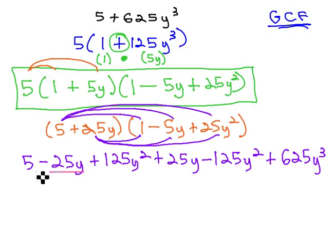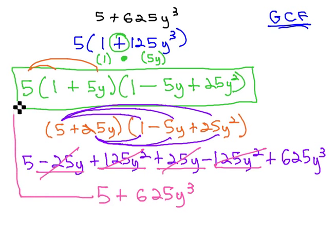As we try and combine like terms, you see the negative 25y and positive 25y subtracting out. The positive 125y squared and the negative 125y squared subtracting out, and all that's left is 5 plus 625y cubed, which is the exact same thing we started with.